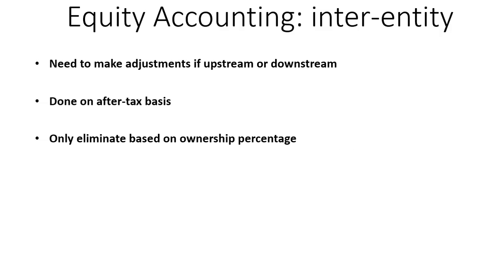Now, equity accounting for inter-entity transactions. We need to make adjustments if they're upstream or downstream transactions — I've got one of each in the example. It's done on an after-tax basis, so adjustments to our share of equity should be done after-tax, just like part one. And we only eliminate based on ownership percentage, which again is exactly the same as part one.